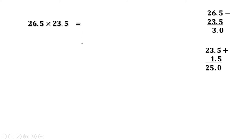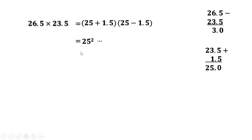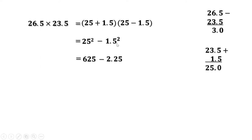So we can write this as (25 + 1.5)(25 - 1.5). We know a + b into a - b = a² - b². Therefore, (25 + 1.5)(25 - 1.5) = 25² - 1.5². The square of 25 is 625 and the square of 1.5 is 2.25. Now 625 minus 2.25 is 622.75. That means 26.5 into 23.5 is 622.75.